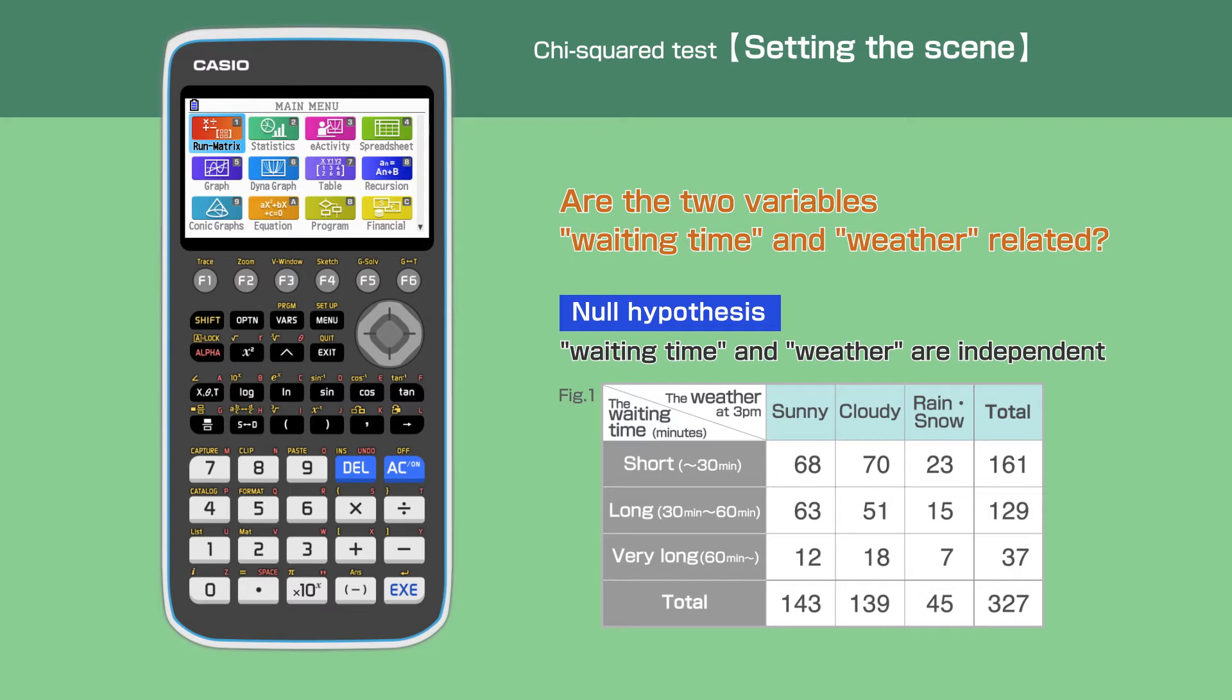Our degree of freedom is 4 and the significance level is 5%.